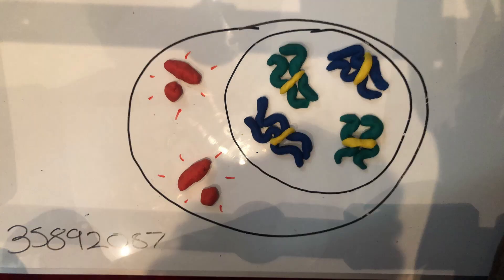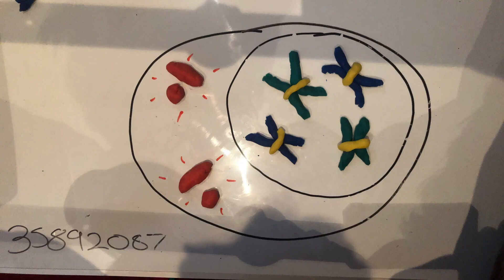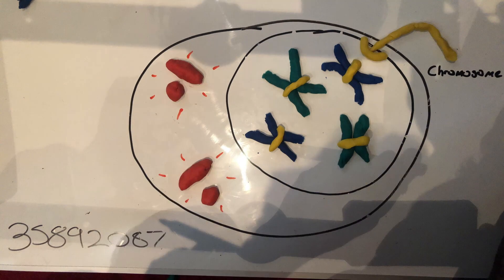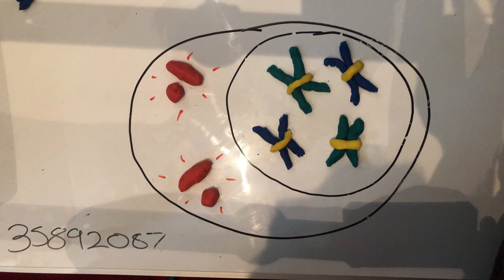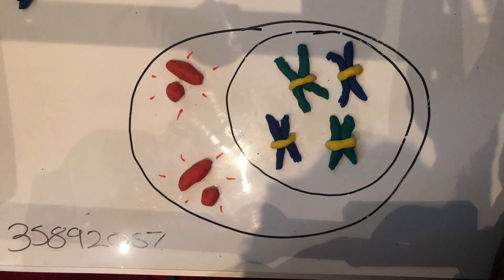Sister chromatids remain attached at the centromere and condense, leading into prophase 1. Prophase 1 is the longest and most complex phase of meiosis, totaling around 90% of the meiotic process. Prophase 1 begins with condensation of chromatin to form chromosomes.